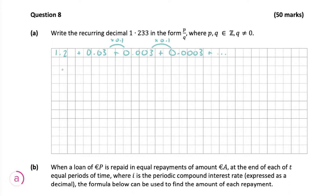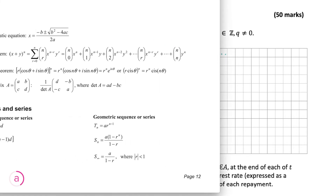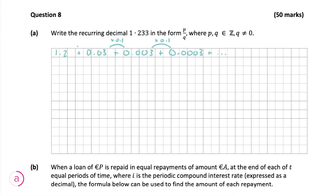Because the ratio is greater than 0 but less than 1, that means we can find the sum to infinity. Looking at our log tables, the sum to infinity is a over 1 minus r. We're going to take the sum to infinity as a — which is 0.03 — over 1 minus 0.1, simplifying to 0.03 over 0.9.